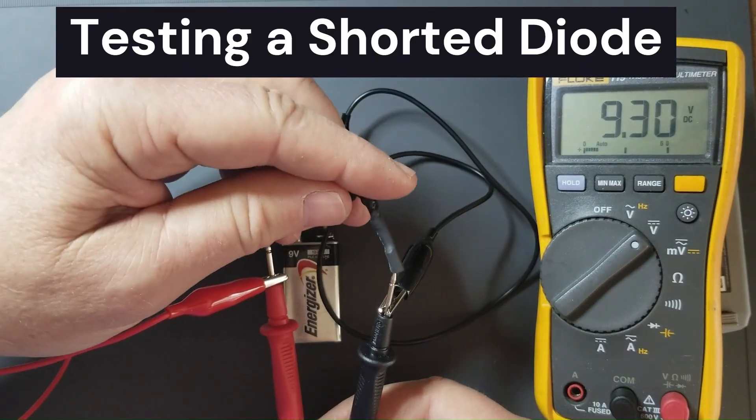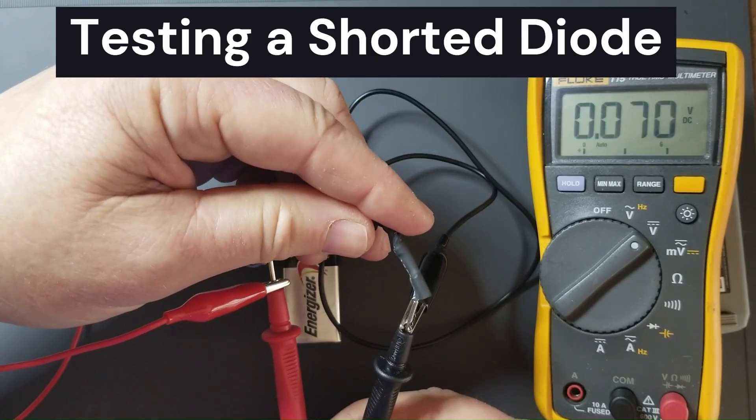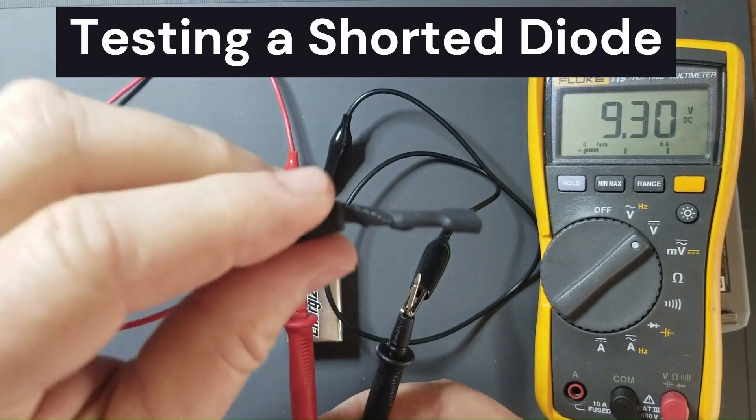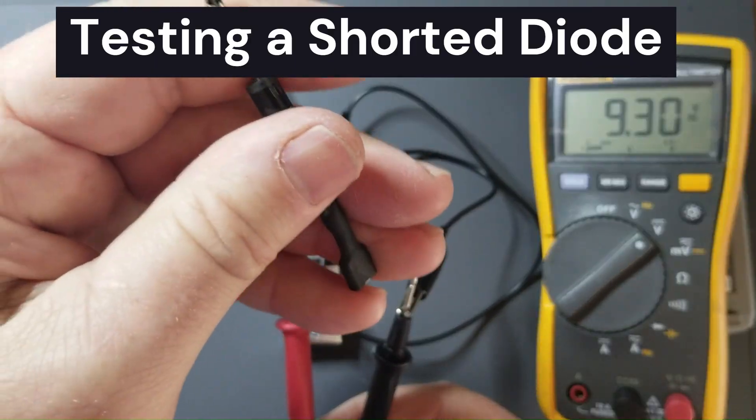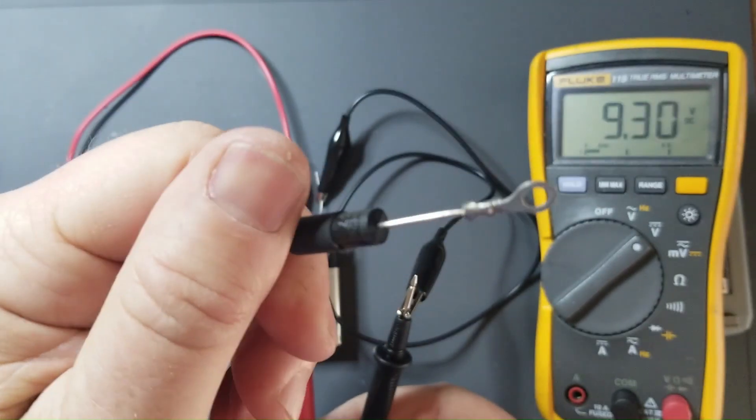Now if I reverse it I get the same thing. So this diode is conducting in both directions which it should not do. A diode should only conduct in one direction. So this is a bad diode.